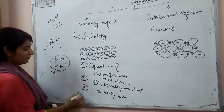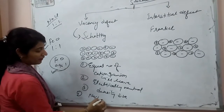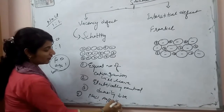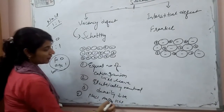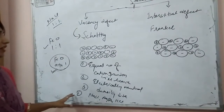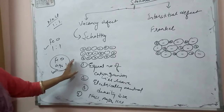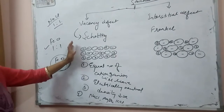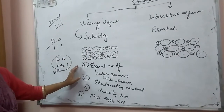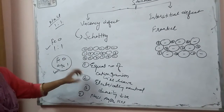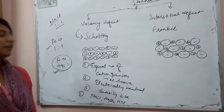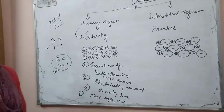Examples of Schottky defects include NaCl, AgBr, and KCl. As vacancy is created and equal numbers of cations and anions are missing from their sites, the crystal will be electrically neutral and its density will decrease.